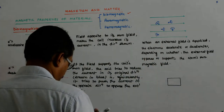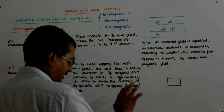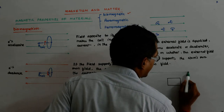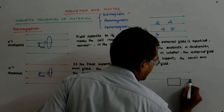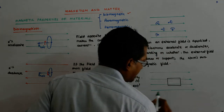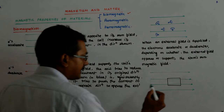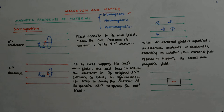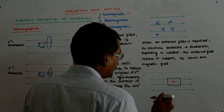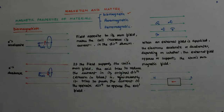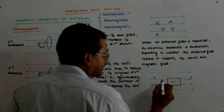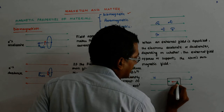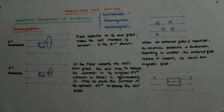So if the field is from left to right, if you apply a field from left to right, what it does is it produces its own field. Say, this is just when you have applied the field — you suddenly apply a field. This responds by generating its own magnetic field like that. So for you, this is the north pole and this is the south. Because your lines are originating from north and going to south. While for our material, this becomes our north pole and this becomes our south pole.